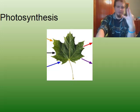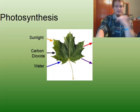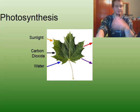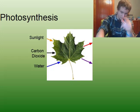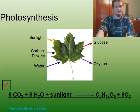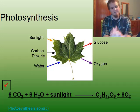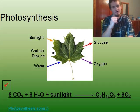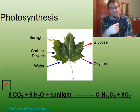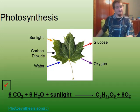For photosynthesis to occur, we need three things: sunlight, carbon dioxide, and water. Once this process takes place inside the plant — specifically inside the chloroplast — it creates glucose and oxygen. The equation for photosynthesis can be summarized as: six molecules of CO2 plus six molecules of H2O plus sunlight yields C6H12O6 (glucose) and six molecules of oxygen.